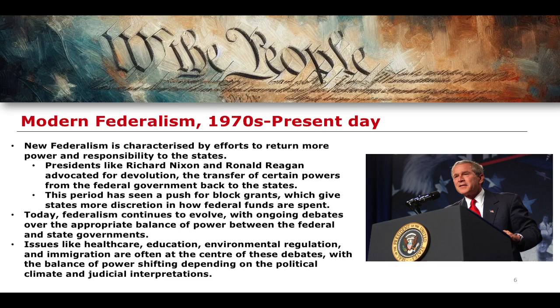Today we have an idea known as modern federalism, taking us from the 1970s into the present day. It is characterized by efforts to return more power, authority, and responsibility back to the states. Presidents like Richard Nixon and Ronald Reagan advocated for a process of devolution — similar to devolution in the United Kingdom, where powers are transferred away from the central administration to more local administrations. This period saw a push for block grants, which give states more discretion in how federal funds are spent.